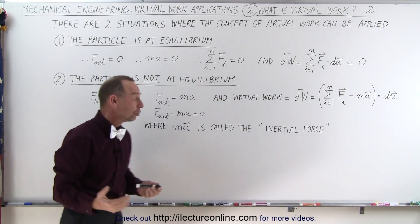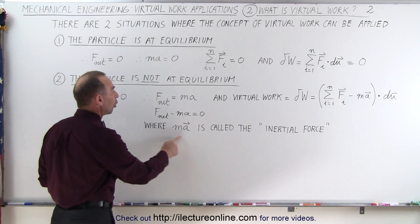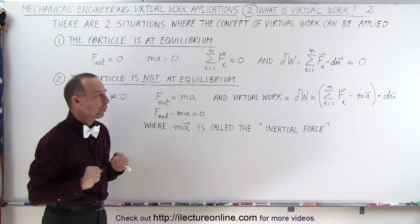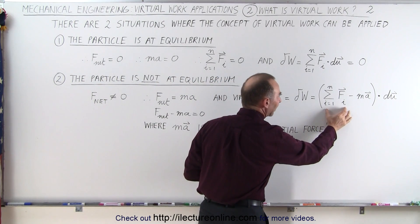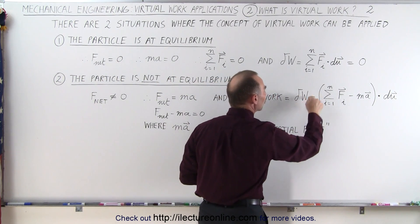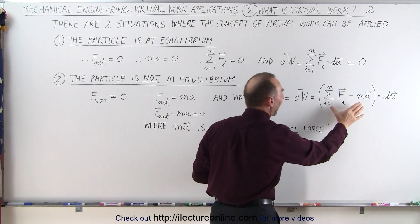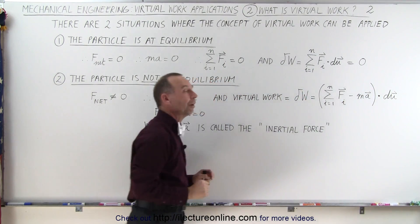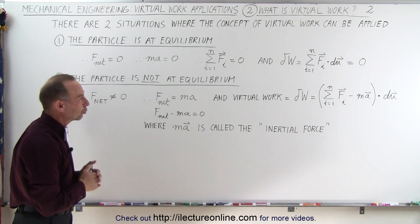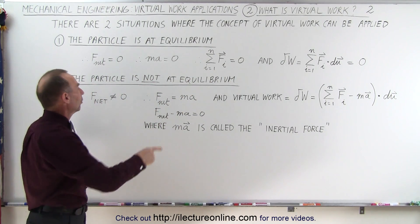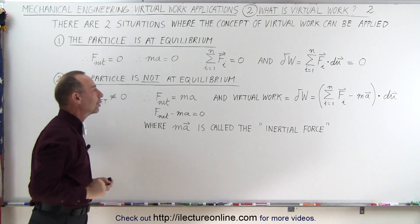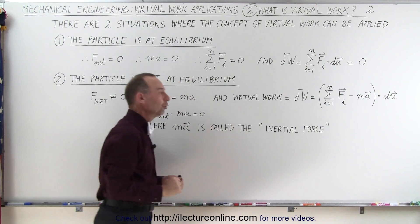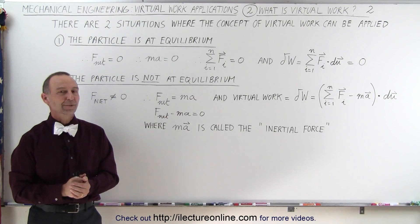now what do we call that ma term? That ma term is called the inertial force. So we turn it into a force, we subtract it from the sum of all the other forces acting on the particle, and then the virtual work again can be defined as this time dot delta u, which also will equal zero. So in both cases, the virtual work will equal zero, but when the particle is not at equilibrium, we have to take into account this what we call inertial force portion. And that's how it's done.